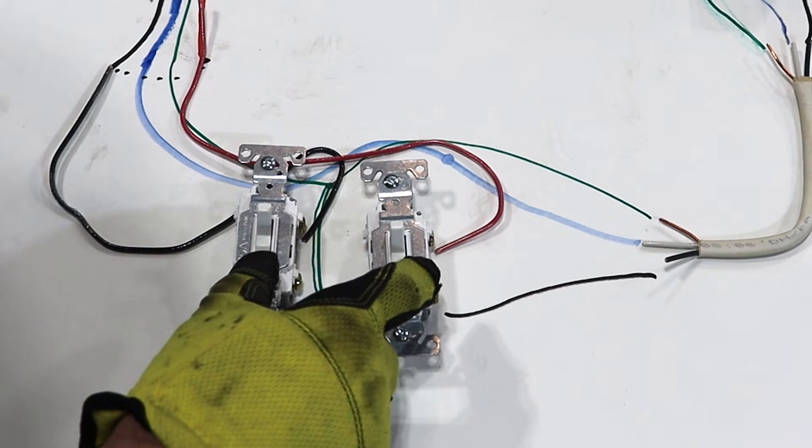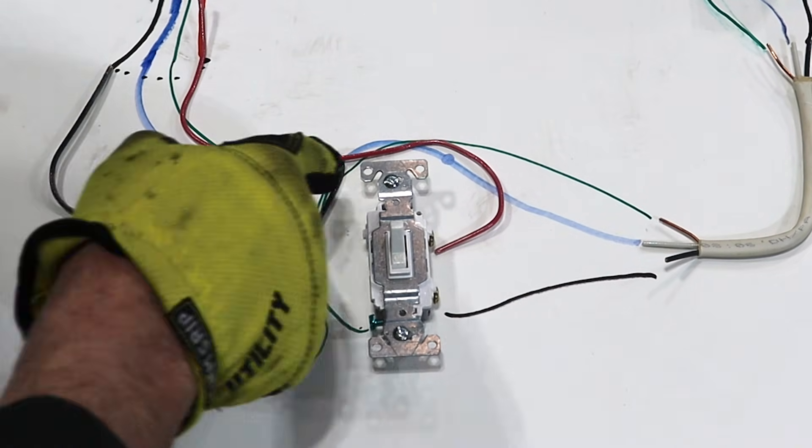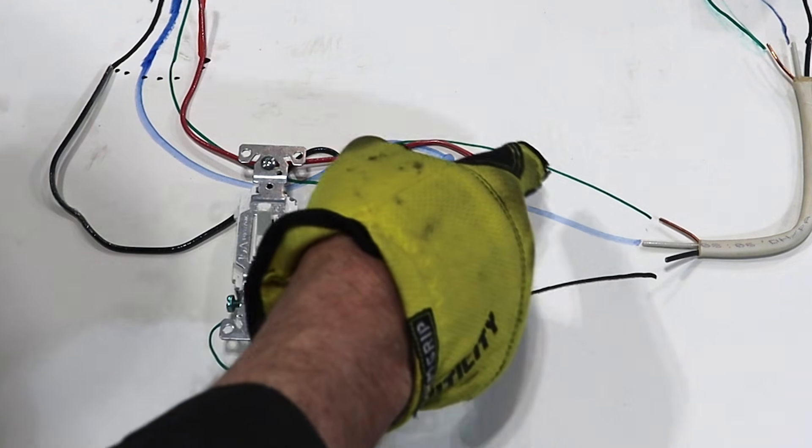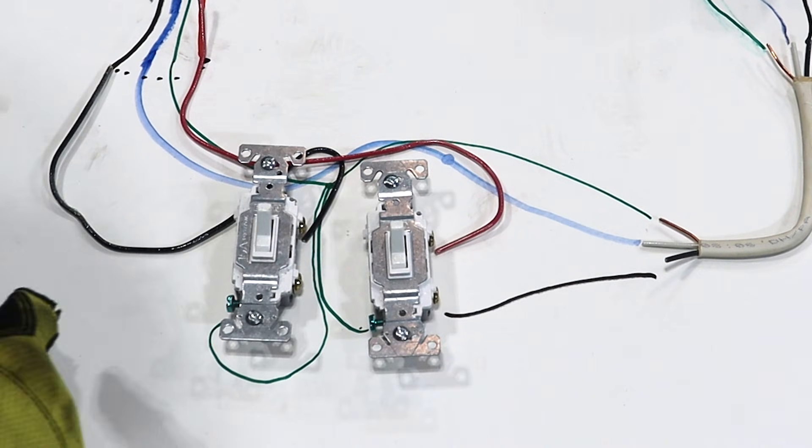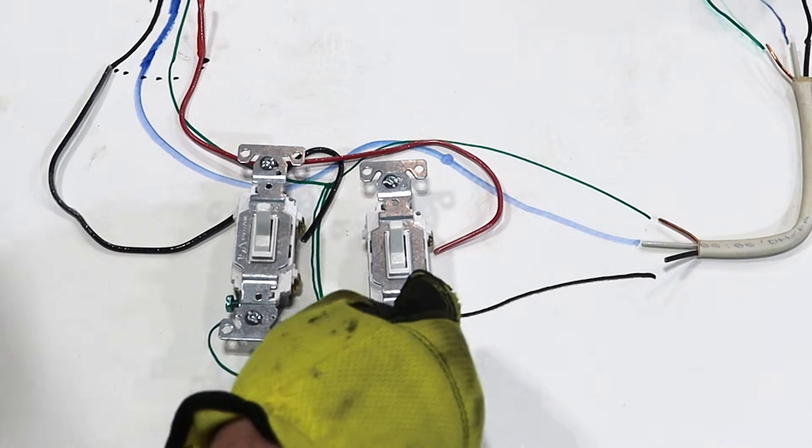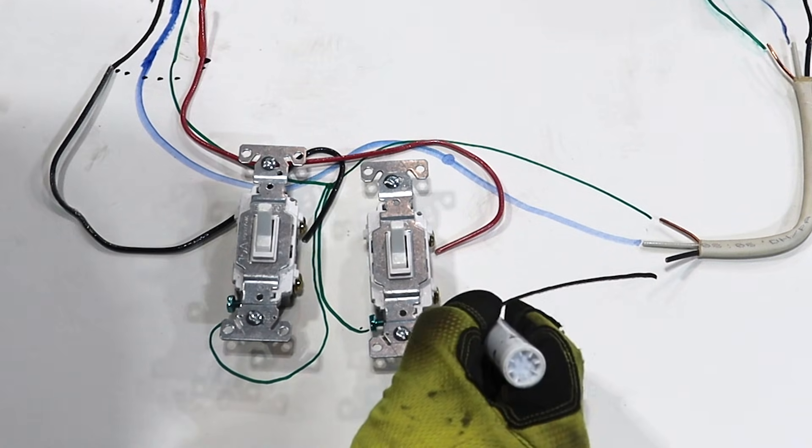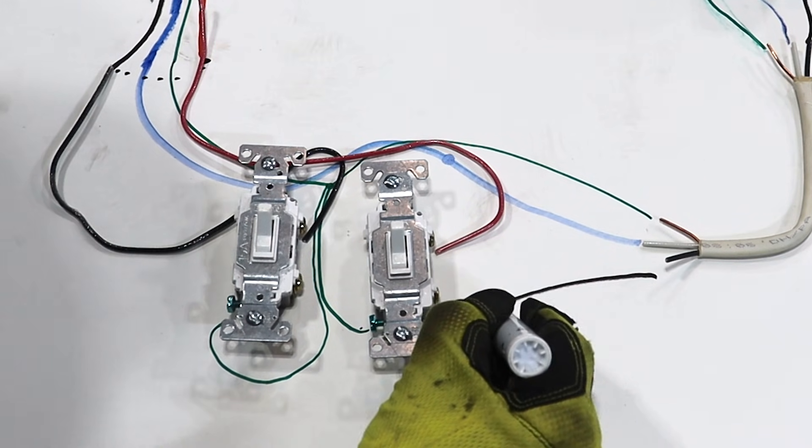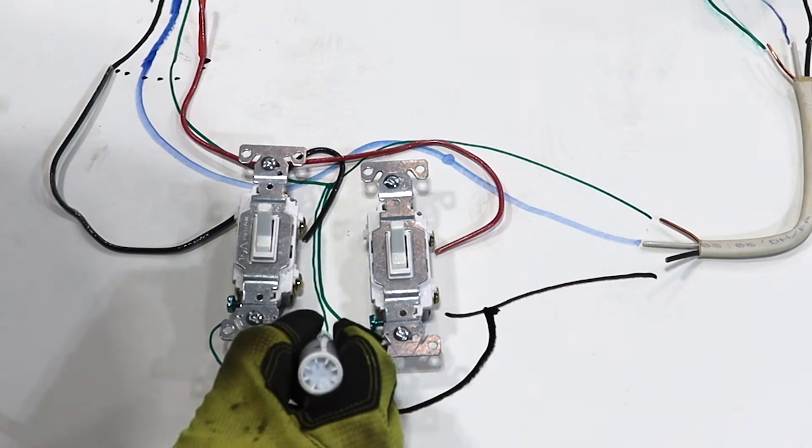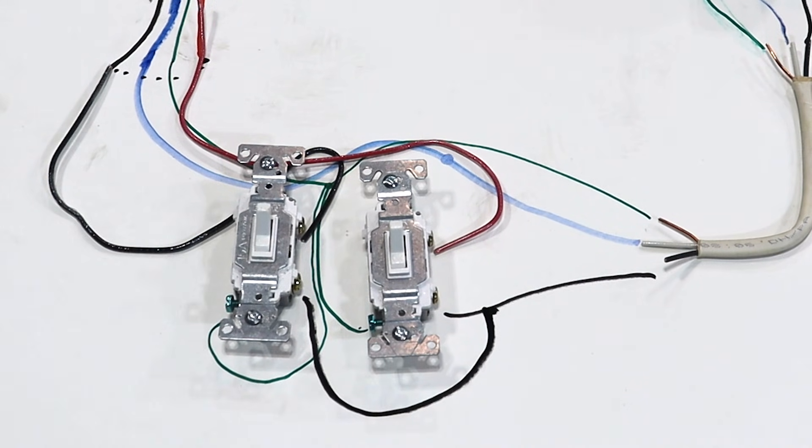What you have with two switches is you have your grounds wire nutted together and then you have your neutral that's wire nutted together and then you have your one hot wire coming in to the first switch but then you're also going to have to pigtail another black wire off to the other switch. So now these two screws will be hot all the time.